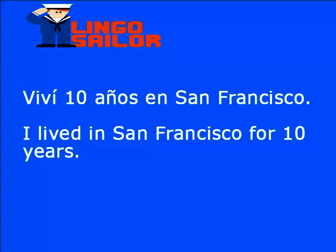Viví diez años en San Francisco. Una palabra nueva aquí es 'años', que en inglés es 'years', Y-E-A-R-S. El tiempo pasado se indica por el cambio de forma del verbo: en español 'vivir' cambia a 'viví', y en inglés 'to live' cambia a 'lived'. En inglés: I lived in San Francisco for ten years.